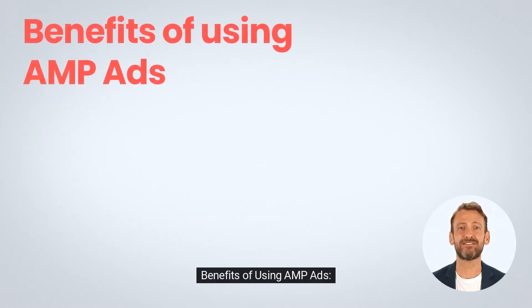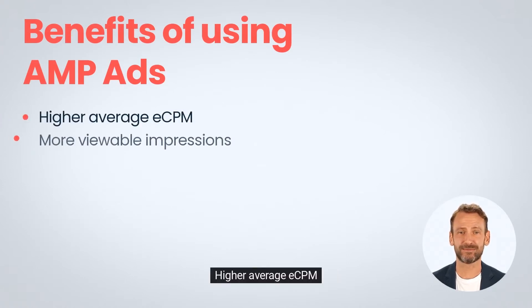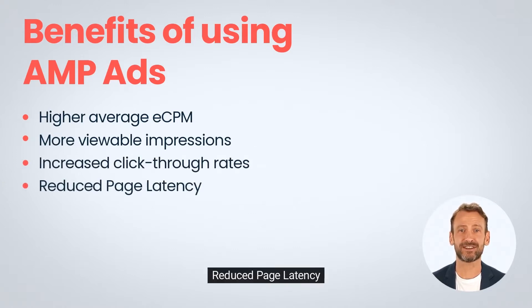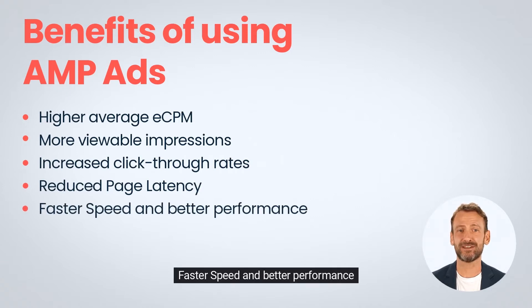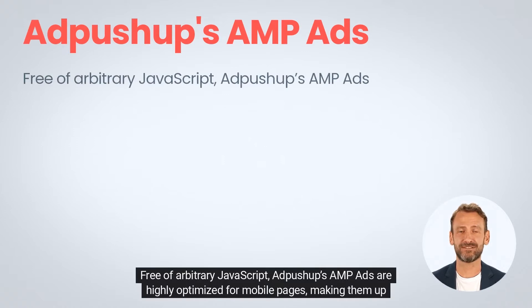Benefits of using AMP ads: higher average eCPM, more viewable impressions, increased click-through rates, reduced page latency, and faster speed and better performance.